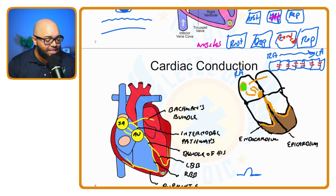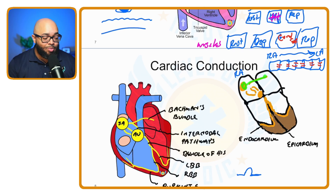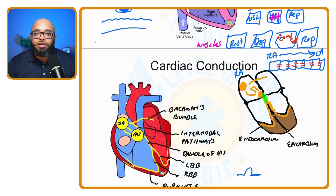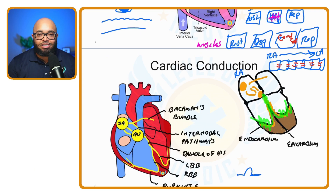Let's recap: SA node fires; signal goes from right atrium to left atrium through Bachmann's bundle; SA node to AV node through internodal pathways; AV node pauses to allow atria to contract and blood to move from atria to ventricles; signal then travels along the bundle of His to the left bundle branch and Purkinje fibers, and the right bundle branch and Purkinje fibers.